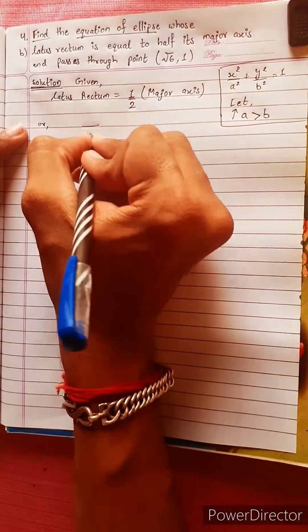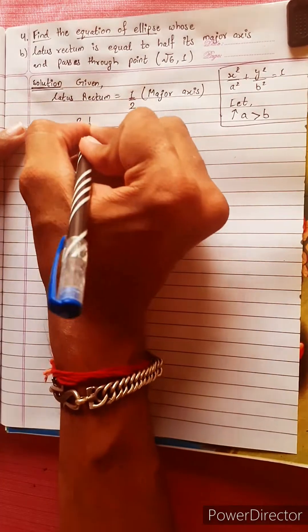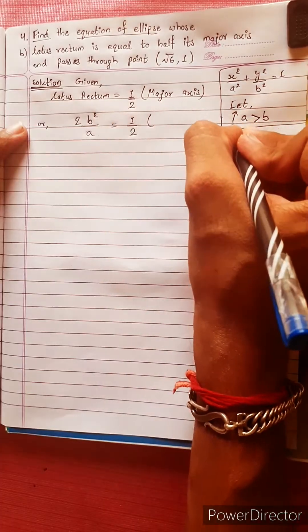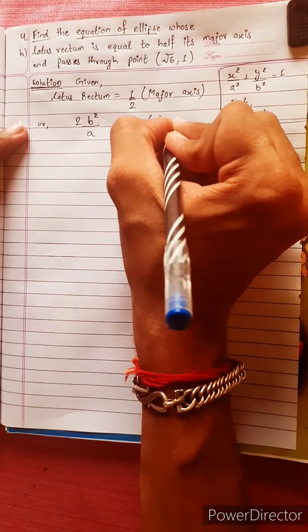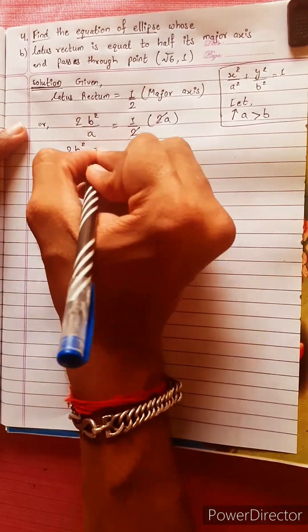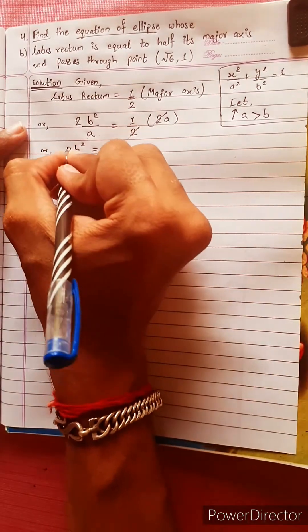And then the formula: latus rectum equals to half of major axis, which is 2b²/a. Major axis is 2a. The 2 cancels, or 2b² equals to a². Let us write this.